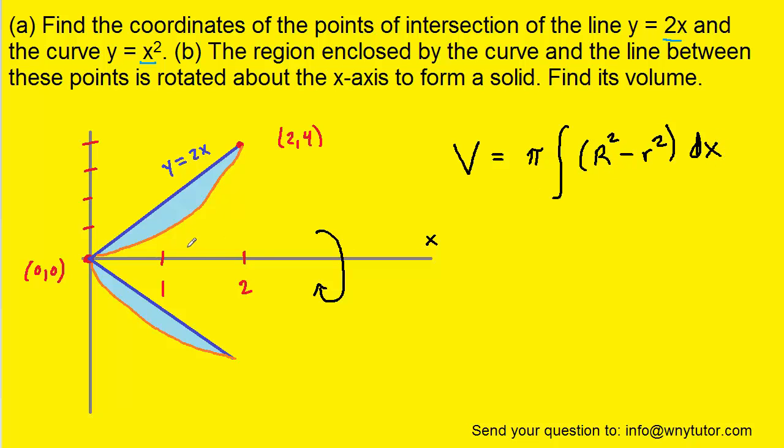Now for the larger radius, we draw a line from our axis of rotation up to the curve that's furthest away from our axis of rotation. We can see that that curve is the expression y equals 2x. So for the large radius, we're going to be substituting in 2x. Don't forget to square it, of course, because it's radius squared.